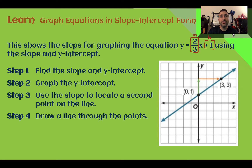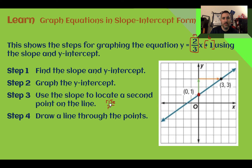Next, once we've identified those two things, we're going to graph the y-intercept by plotting a point there. In this case, my b was positive one, so I'm going to plot a point going up one. Here we can see they have a point there. After we've plotted that point, we're going to think about our slope as our ratio. Remember, our slope is the ratio of our rise over the run. In this case, our slope was two-thirds, meaning I have to rise two with a run of three.